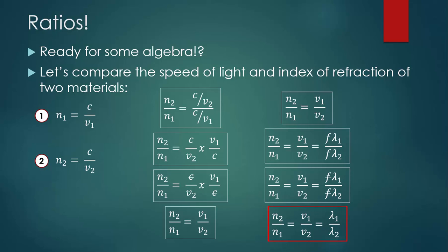This leaves us with our final set of ratios, N2 over N1 equals V1 over V2 equals lambda 1 over lambda 2. Like we've seen before, you would take two of these terms, based on what you're given and what you're trying to find out, and set them equal to each other.